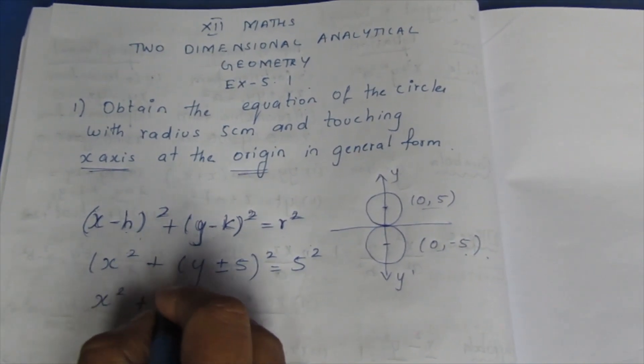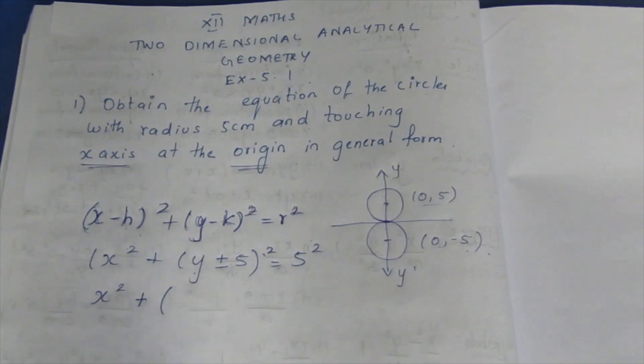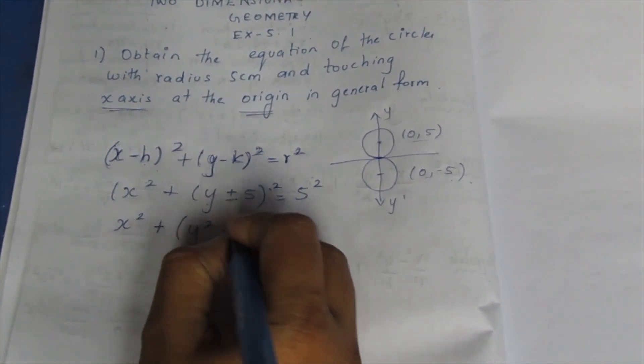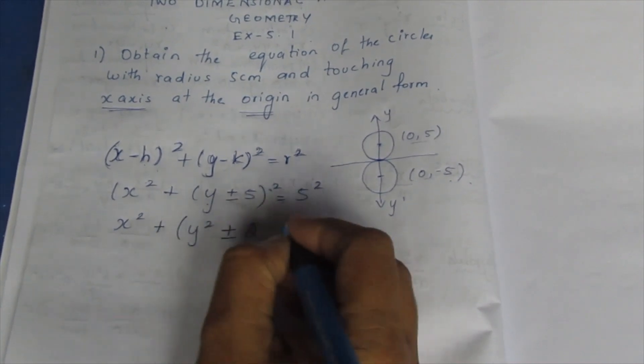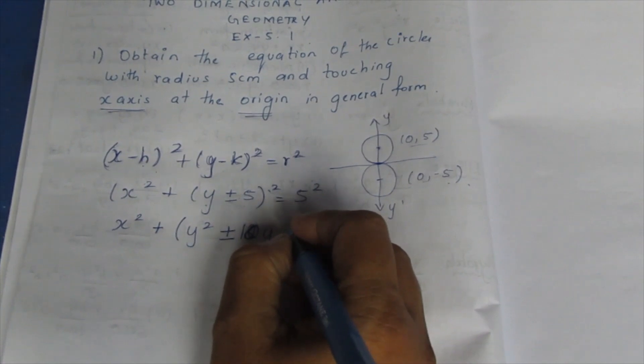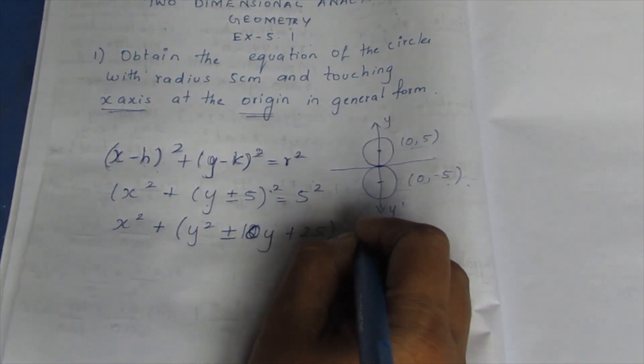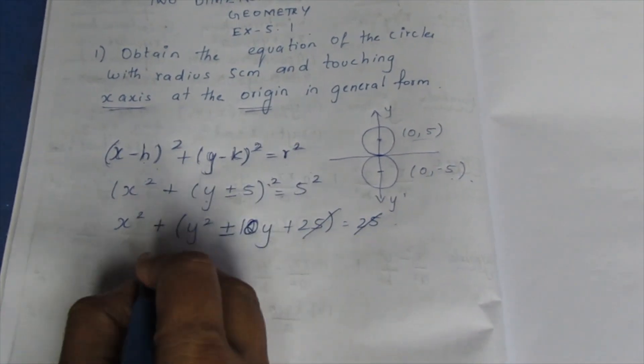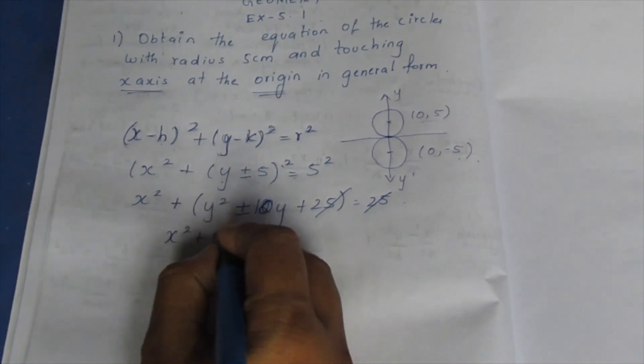Plus (a+b)^2 formula, so y^2 plus or minus, y times 2 is 10, so 10y plus 25 is equal to 25. The 25 and 25 cancel, so x^2 plus y^2 plus or minus 10y equal to...